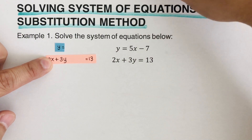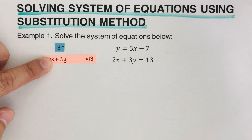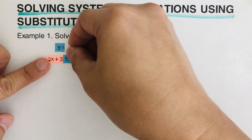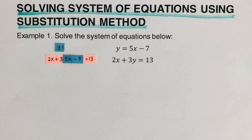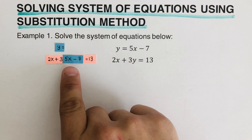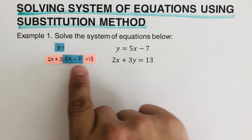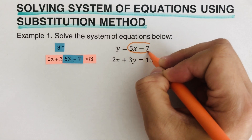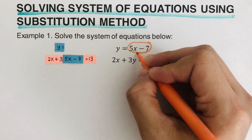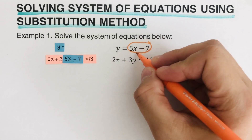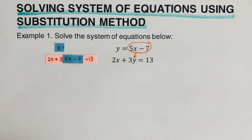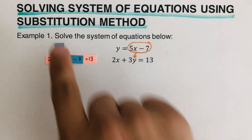So what I'm going to do is plug this 5x minus 7 into the y. So instead of putting y in there, I will put the 5x minus 7. What's going on here is that we are taking this 5x minus 7 and putting it into the y, since this orange one is equal to y. And that's what we mean by substitution method.